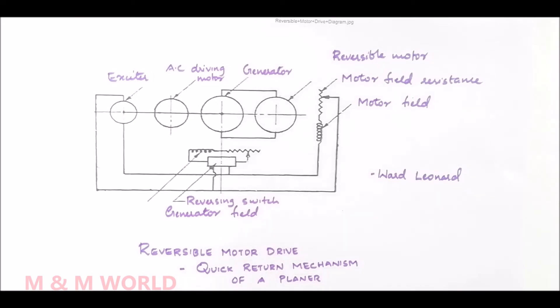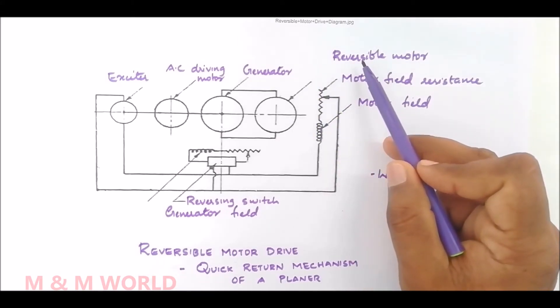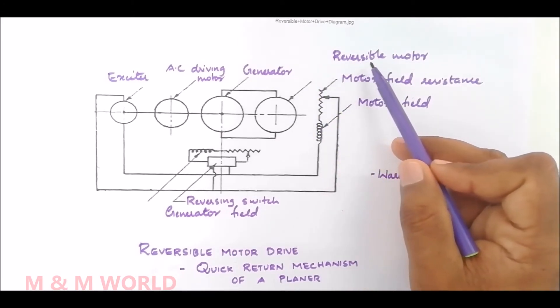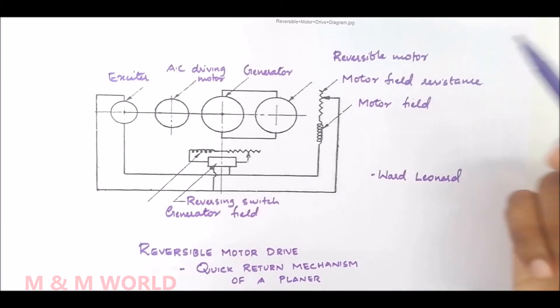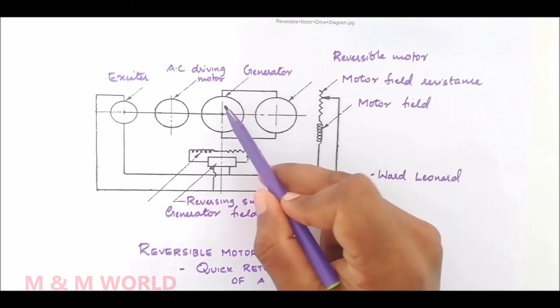A DC variable speed reversible motor is coupled with planer table drive gearing and it receives power from the DC generator.